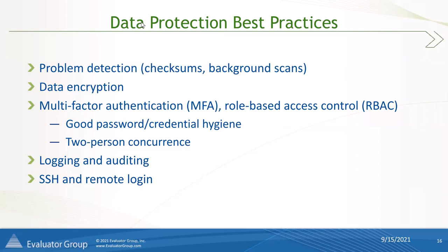Another item is the concept of access control. We see a lot of data protection software today using capabilities like multi-factor authentication and role-based access control to make sure that only the correct user is able to access backup data, and that they only have the amount of control they really specifically need to get their job done. This can help prevent that bad actor from accessing the backup copies. We also see what's called two-person concurrence — certain actions like changing an immutability setting or deleting a storage volume might require authorization from two individuals, so that one individual cannot go in and wreak any havoc.